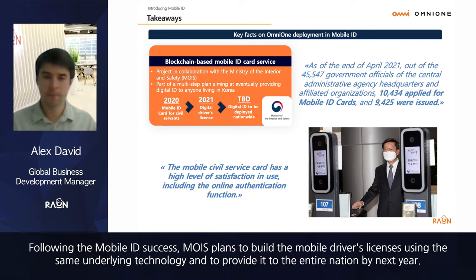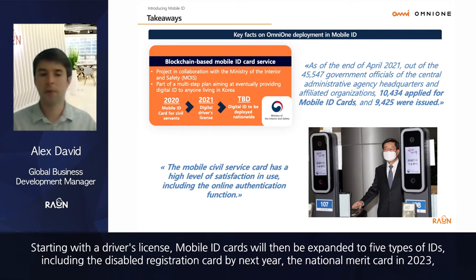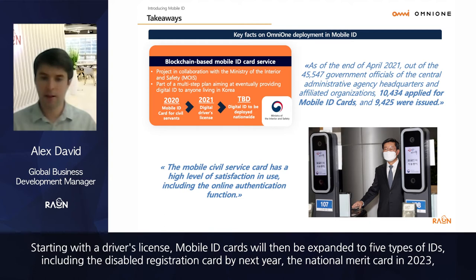Starting with the driver's license, mobile ID cards will be expanded to five types of IDs, including the disabled registration card the following year, the national merit card in 2023, an additional card in 2024, and the alien registration card in 2025.